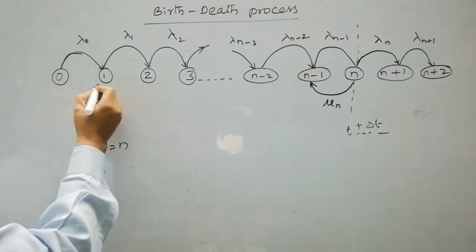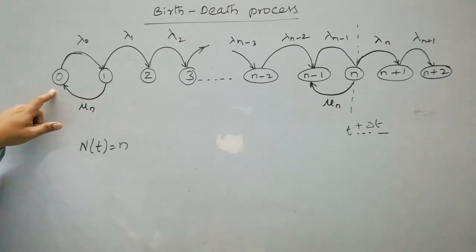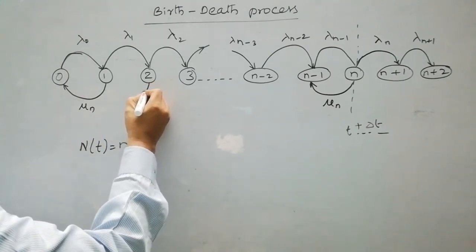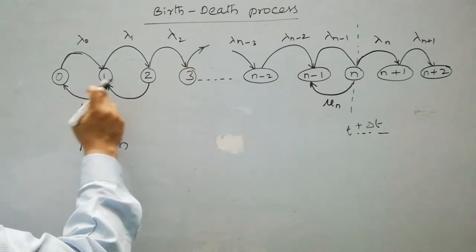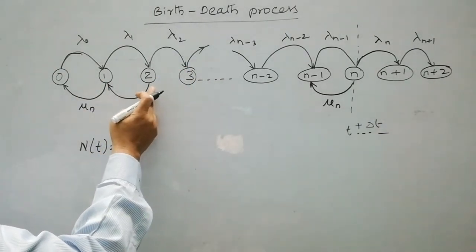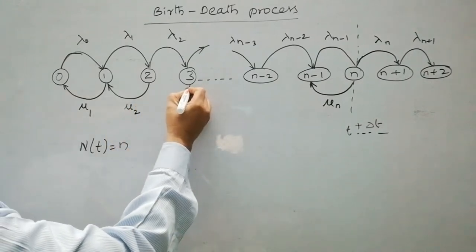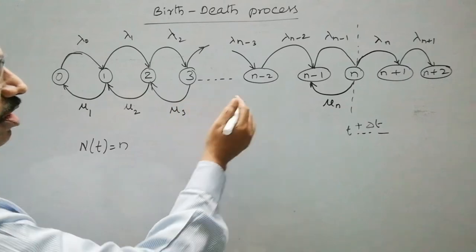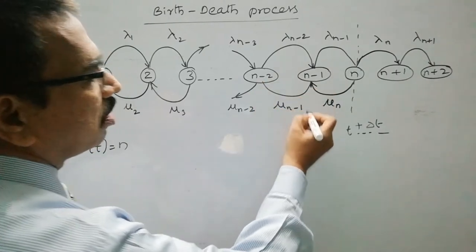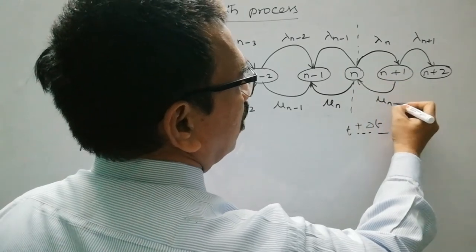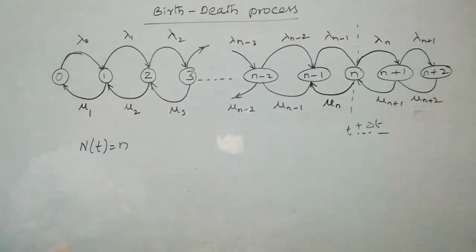Similarly for mu: when the state is 1 and a service completion occurs, the number of customers becomes 0. At state 2, if a service completion takes place before a new arrival, the state moves from 2 to 1; if a new arrival takes place first, state moves from 2 to 3. The parameters are mu_1, mu_2, mu_3, and so on, mu_{n-2}, mu_{n-1}, mu_n, mu_{n+1}, and mu_{n+2}. This is how the parameter changes for different states.